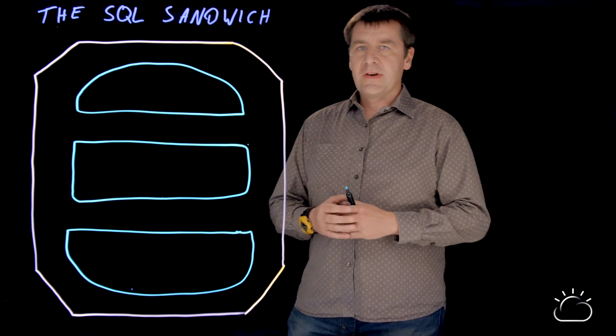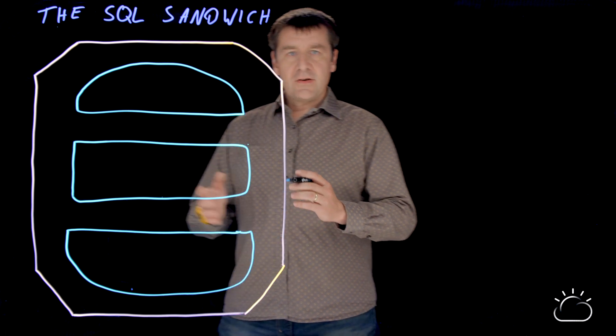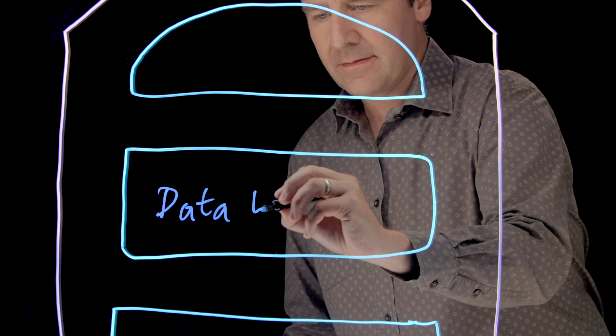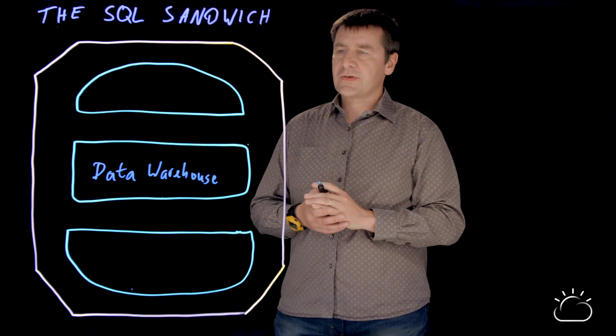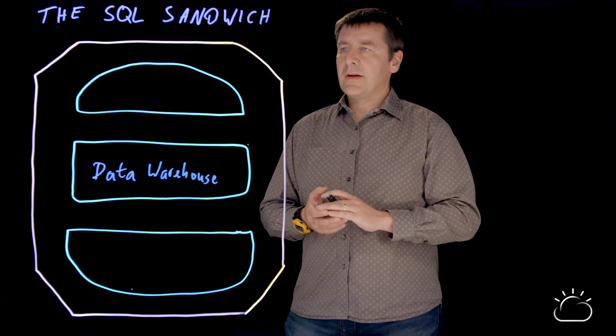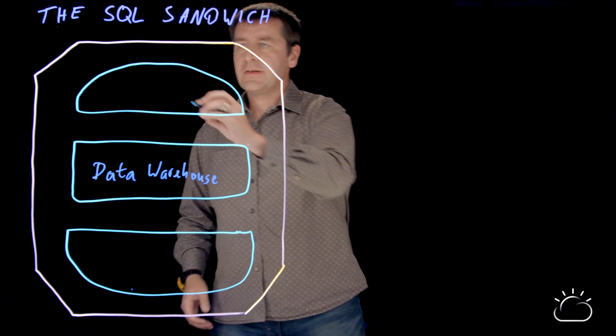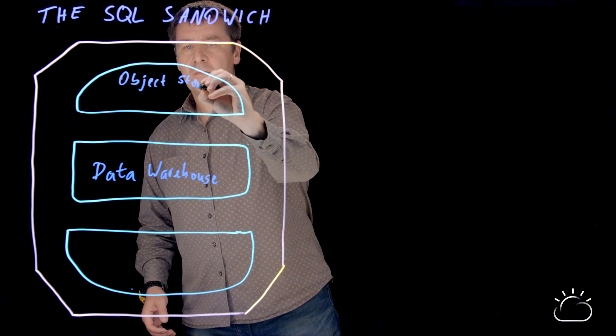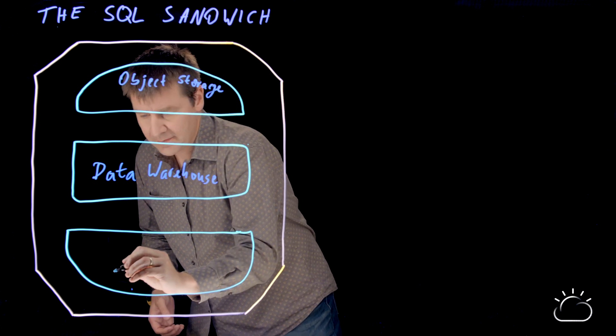As you can see in the image, we are putting it together as a nice and tasty sandwich. At the center of the sandwich, we have our data warehouse. This is a very well established mechanism of storing and analyzing big data. But we are surrounding it now with more recent technology that is especially popular in the cloud, and this is object storage. We have it as the buns for the sandwich at the top and at the bottom.